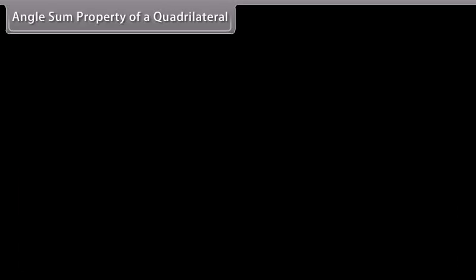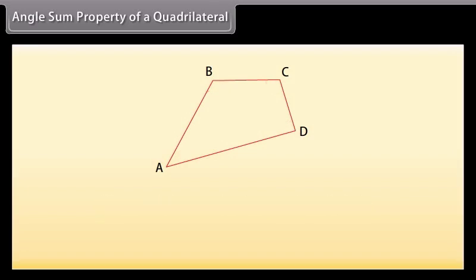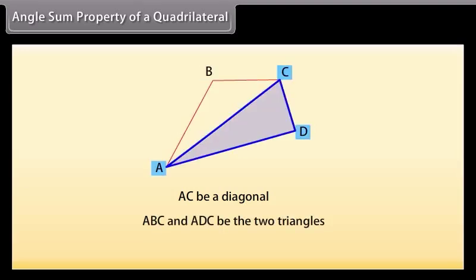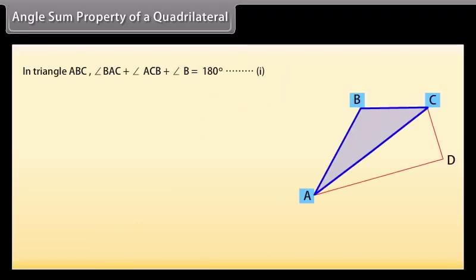Angle sum property of a quadrilateral: The sum of all the angles of a quadrilateral is 360 degrees. This is called the angle sum property of a quadrilateral. To find the sum, let's divide this quadrilateral into two triangles by drawing a diagonal. Let AC be a diagonal and triangle ABC and triangle ADC be the two triangles. We know that the sum of all the angles of a triangle is 180 degrees.